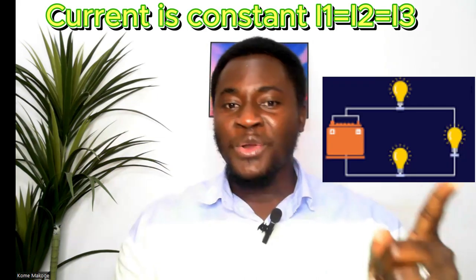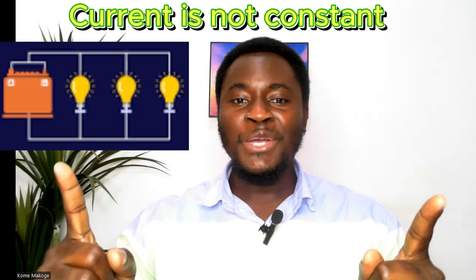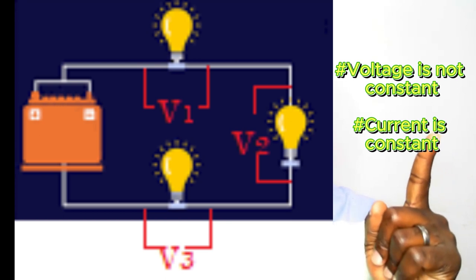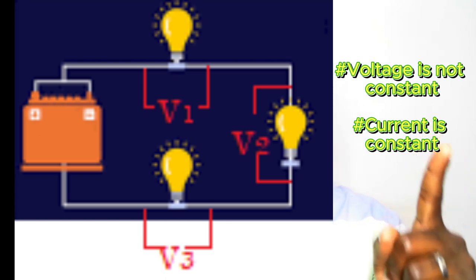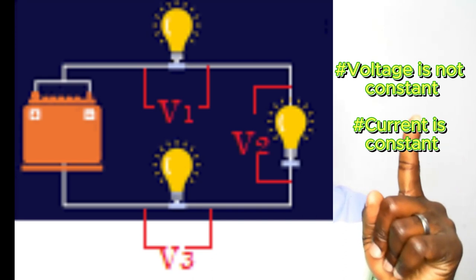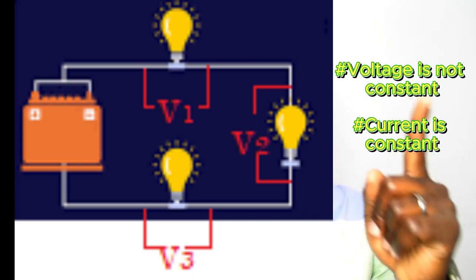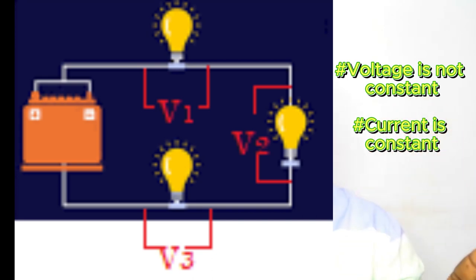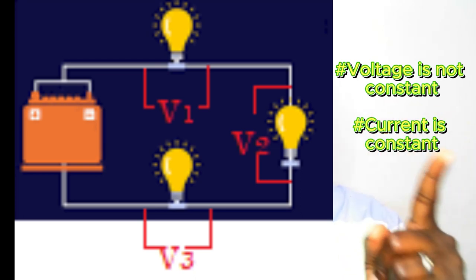The difference between the two, or how we identify them, comes down to current and voltage. For a series circuit, the current is constant, while for a parallel circuit, the current is not constant — it varies. For a series circuit, the voltage is not constant; we have varying voltage due to voltage drop across each of the different loads or resistors connected in that circuit.